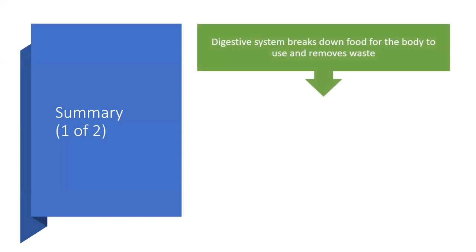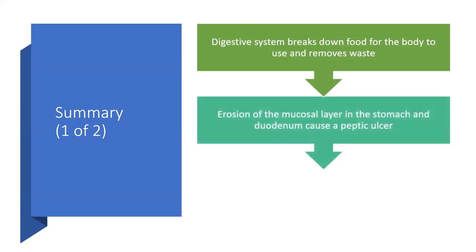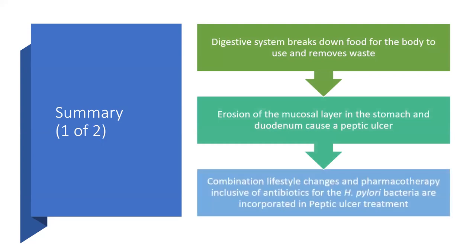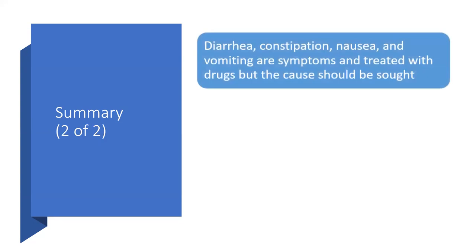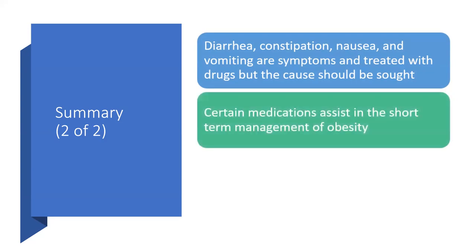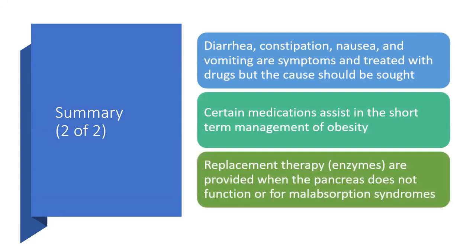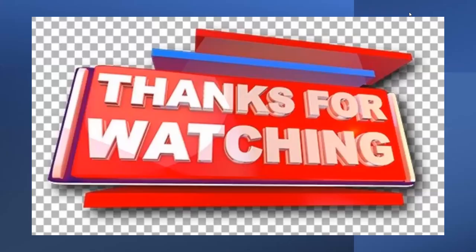In summary, the digestive system breaks down food for the body to use and remove waste. Erosion of the mucosal layer in the stomach and duodenum causes peptic ulcer. Treatment combines lifestyle changes — healthy eating and healthy lifestyle — with pharmacotherapy including antibiotics for H. pylori bacteria. Diarrhea, constipation, nausea, and vomiting are symptoms treated with drugs, but the underlying cause should be sought out. Certain medicines assist in short-term management of obesity, and enzyme replacement therapy is provided when the pancreas does not function properly or for malabsorption syndromes.